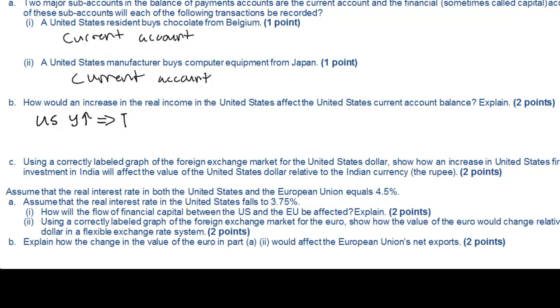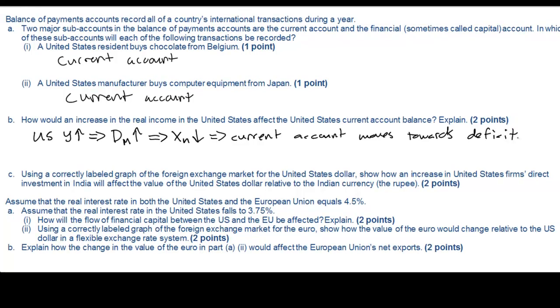The next question: how would an increase in real incomes in the US affect US current account balance? As US incomes rise, the demand for imports in the United States will rise, since Americans have more disposable income to spend. The increase in imports will reduce America's net exports causing America's current account balance to move towards deficit.